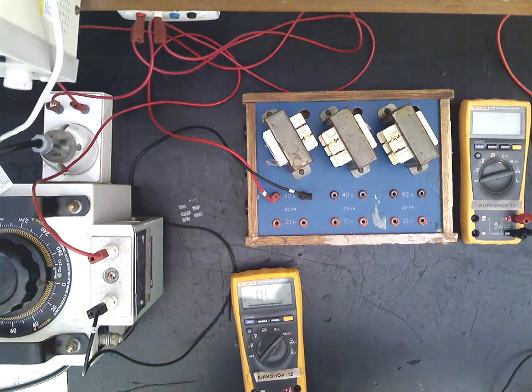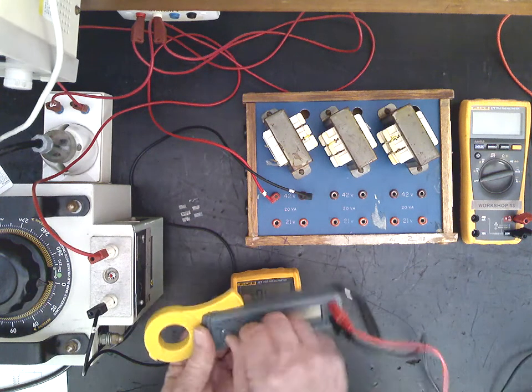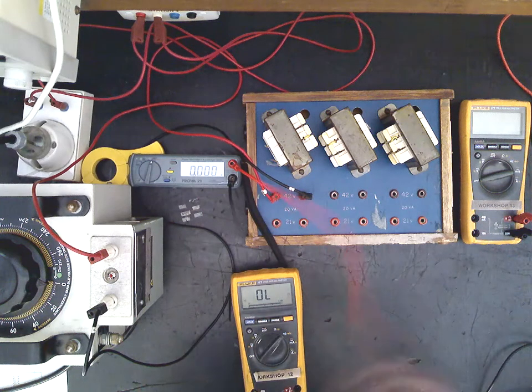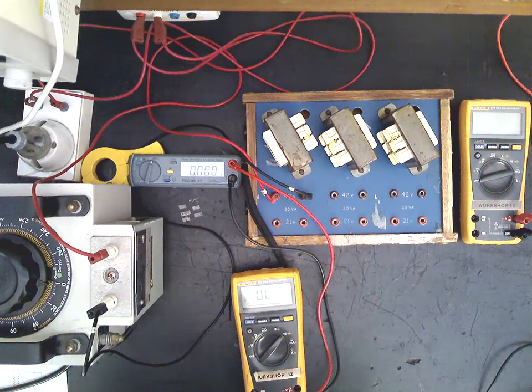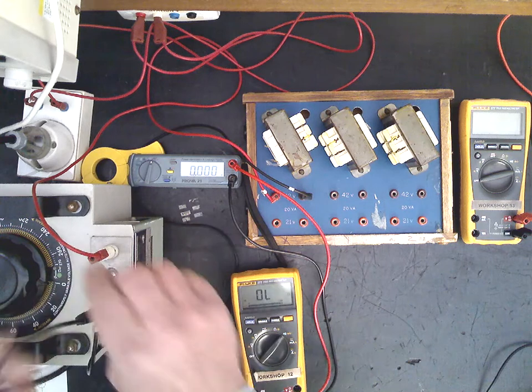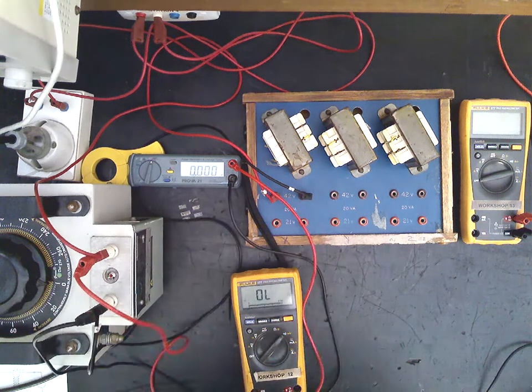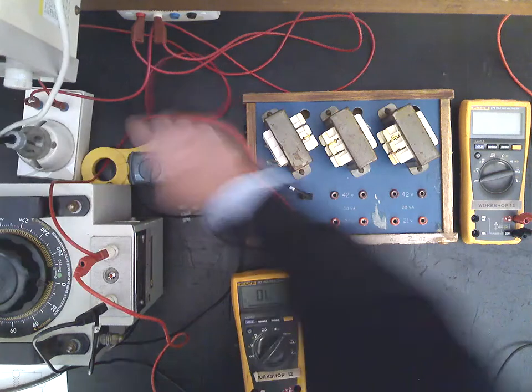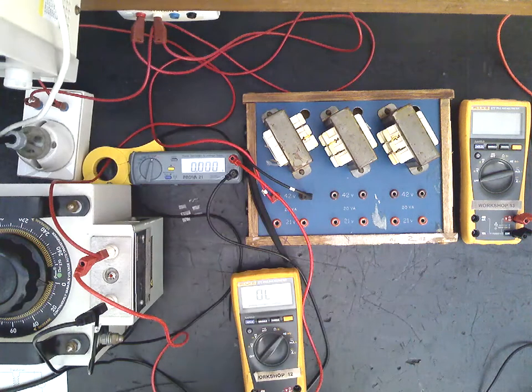So we set up a watt meter in the primary, a little digital watt meter there. So this one's set up with a voltage and a current. So there's our voltage connection just across the supply. And we can put that tong around that active coming into the primary of the transformer.